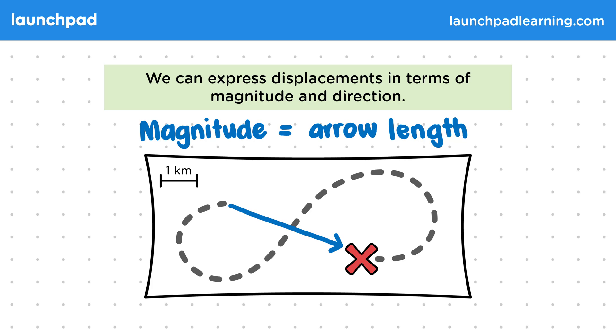The direction of this displacement is found by looking at what direction we need to travel in to get from the start to the end point. So in this example the direction is south-east. So does that mean the magnitude of a displacement and a distance are the same thing?